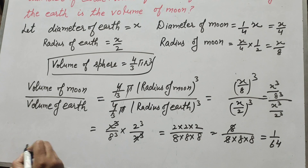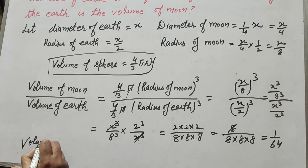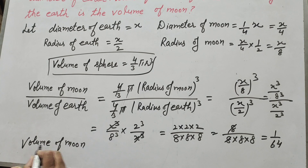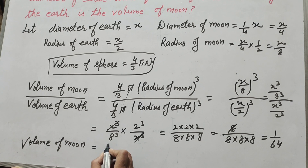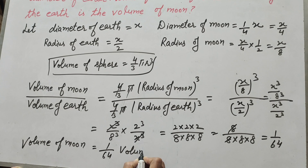So the volume of moon is equal to 1 over 64 times the volume of earth.